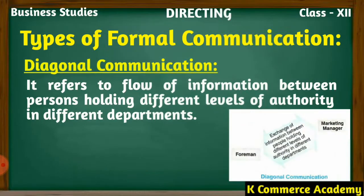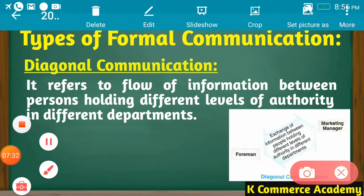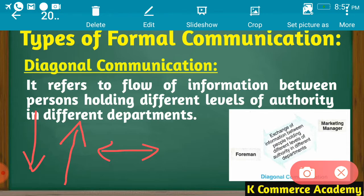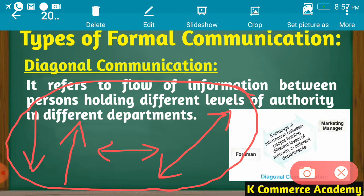Let me summarize: when information is transferred from superior to subordinate, it is downward communication; when ideas or suggestions are transferred from subordinate to superior, it is upward communication; when information is shared between two persons of the same authority level — two managers or two workers — it is horizontal communication; and when communication takes place between the superior of one department and the subordinate of another department, it is diagonal communication. These are the four types under formal communication.